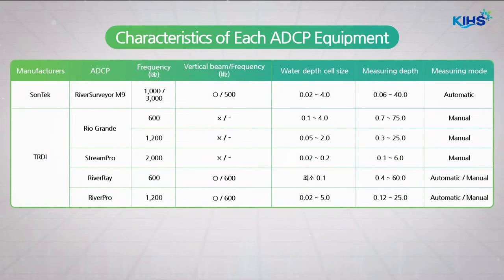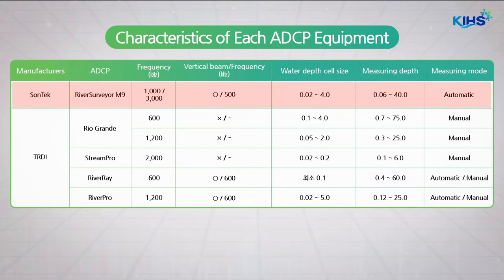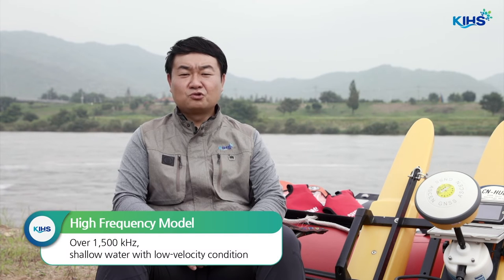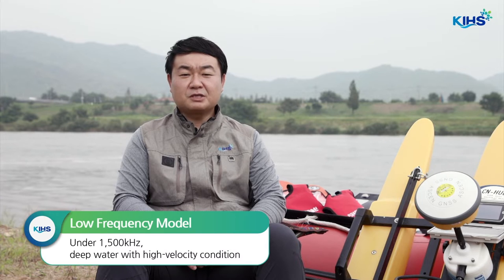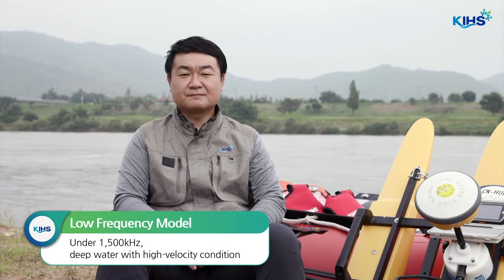Generally, the baseline that divides high-frequency and low-frequency is 1500 kHz. Recently, multi-frequency models such as the M9 are widely used. High-frequency models are appropriate for shallow water with low-flow conditions, while low-frequency models are suitable for deep water with high-flow conditions. Multi-frequency models can be used in all conditions.